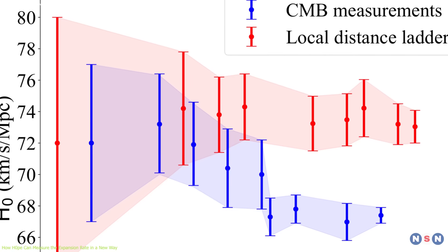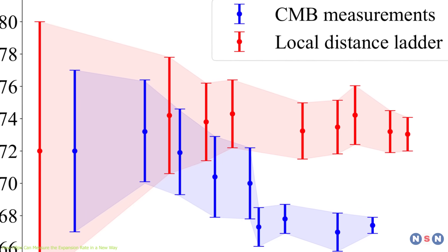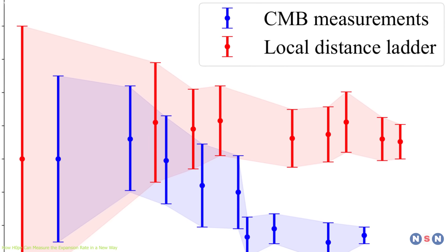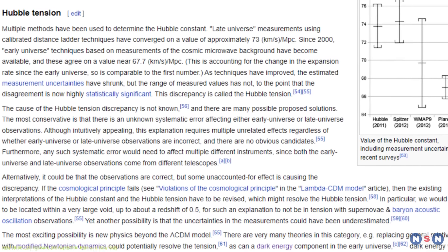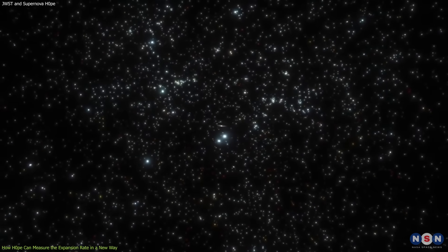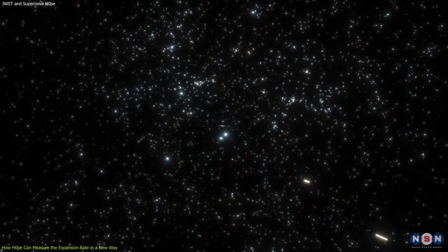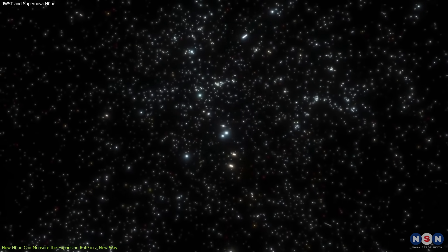Different methods of measuring H0 give different results. And these results are not just slightly different, but significantly different, with a discrepancy of about 10%. This discrepancy is known as the Hubble tension, and it implies that either our measurements are wrong, or our understanding of the universe is wrong. And neither option is very appealing.